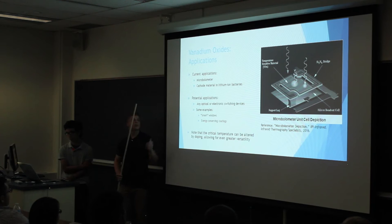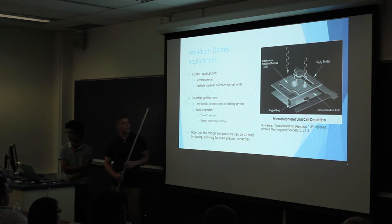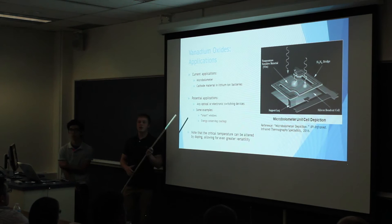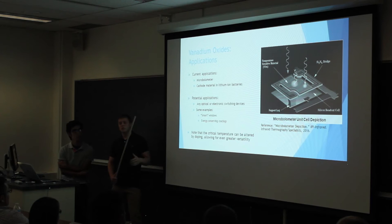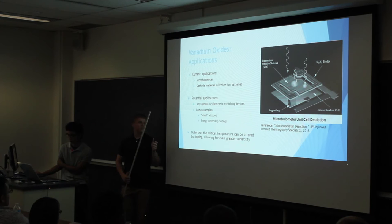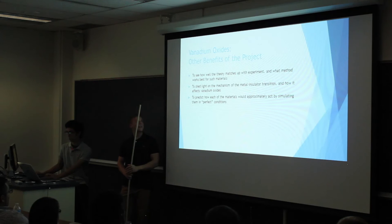With the potential applications, they're a bit more focused on the optical, which is why we're going to be predicting those. Some examples would be any sort of electronic or optical switching device, and this is due to the metal-insulator transitions. Some examples would be smart windows or energy-conserving coatings, where they would be deposited in thin film form and function to absorb some energy from light after a certain temperature is reached. It's also important to note that the critical temperatures can be altered by doping, which would allow for even greater versatility.